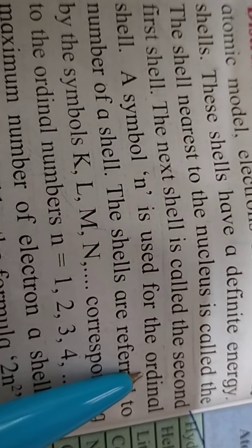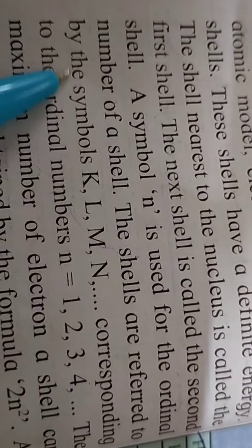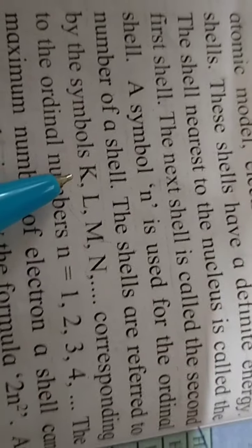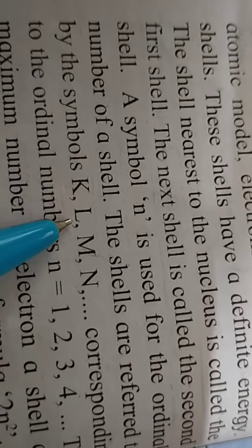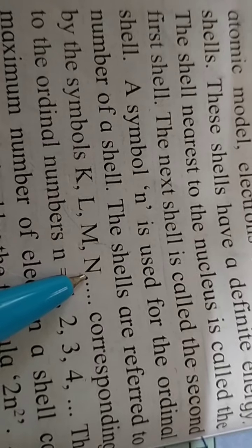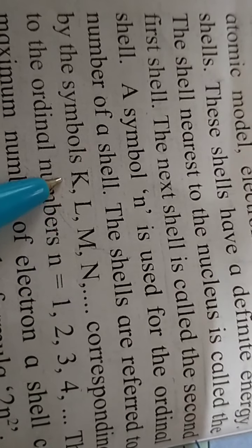A symbol n is used for the ordinal number of a shell. The shells are referred to by the symbols K, L, M, N. The first shell or orbit we call K, the second orbit is L, the third orbit is M, and the fourth orbit is N. We name the orbits with these letters.